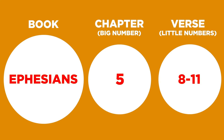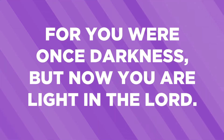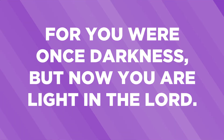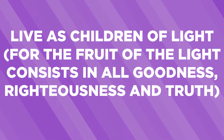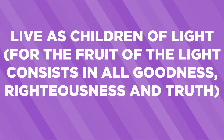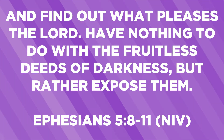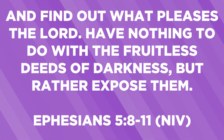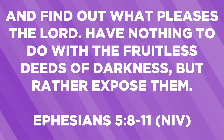Let's all turn to it now. Today we're reading Ephesians 5:8 through 11. I hope you found it because we're jumping right in — if you haven't, that's okay too, you can always follow along on the screen. It says: "For you were once darkness, but now you are the light in the Lord. Live as children of light, for the fruit of the light consists in all goodness, righteousness, and truth, and find out what pleases the Lord. Have nothing to do with the fruitless deeds of darkness, but rather expose them."